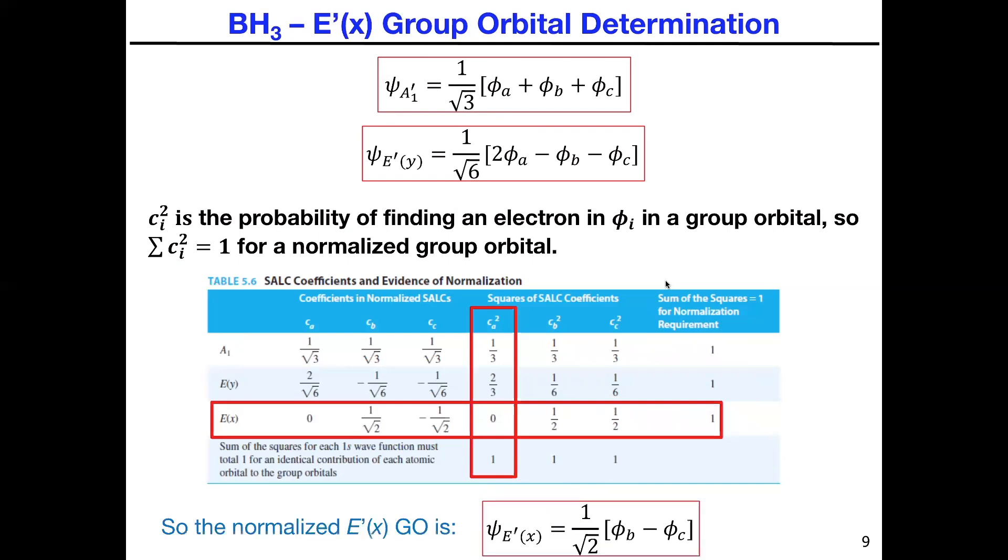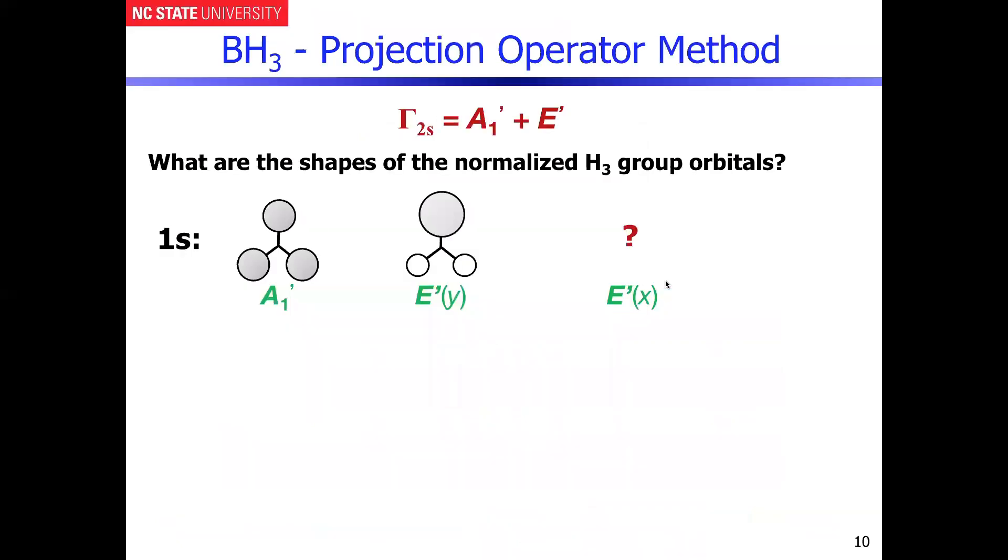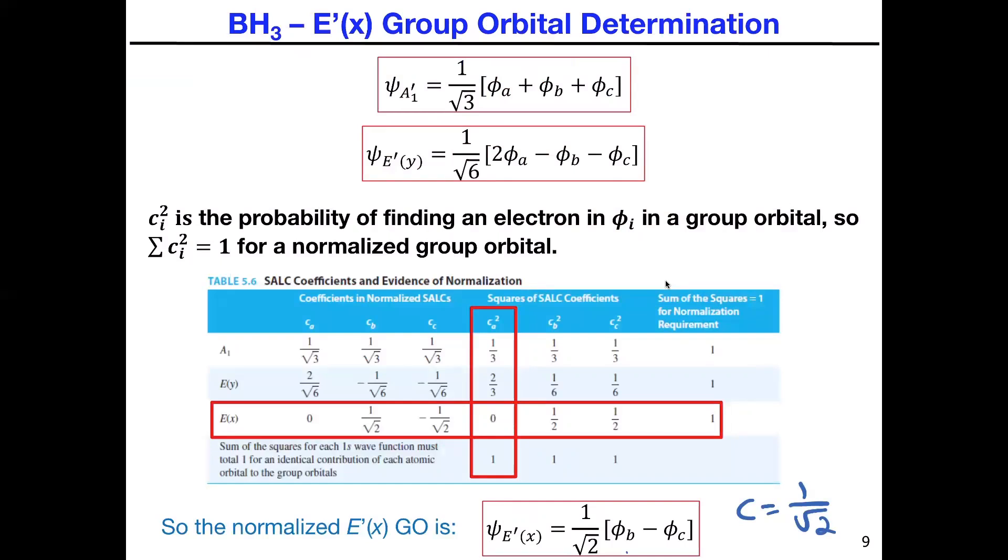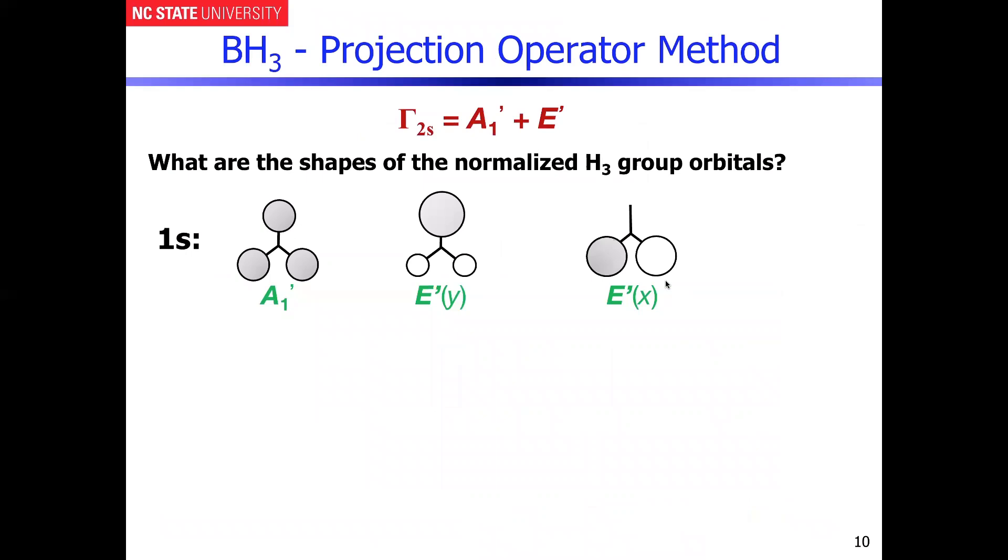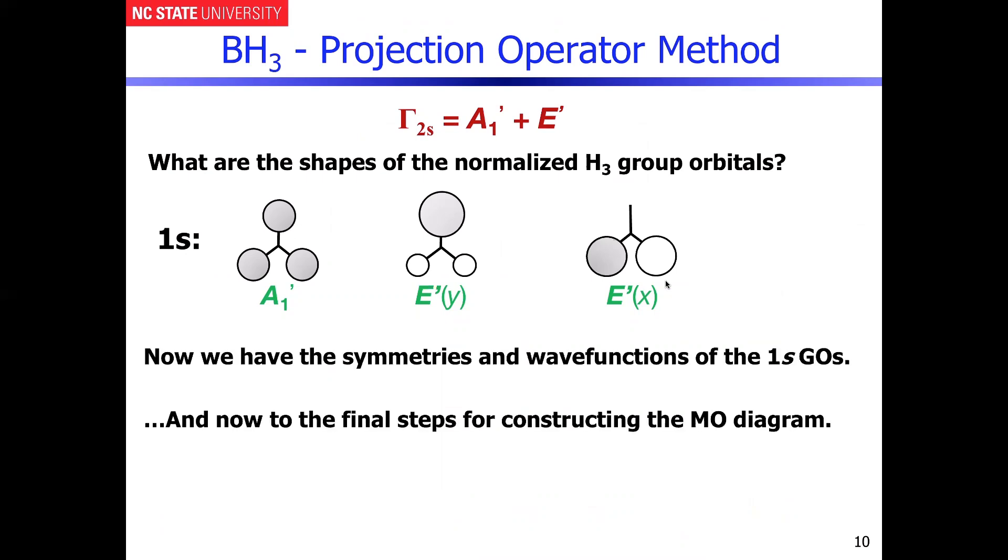The coefficient on the E'(x) group orbital has to be 1 over the square root of 2, giving you phi B minus phi C. The group orbital will look like HB minus HC. Now that we have the symmetries and wave functions of all these 1s group orbitals, as well as their magnitudes, we can go to the final steps for constructing the MO diagram.